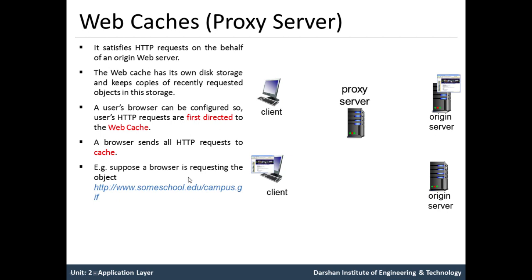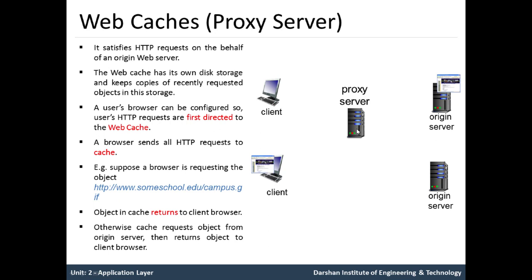For example, if the browser is requesting the URL some-school.edu/campus.gif, the object stored in the proxy server is returned to the client browser. If the object is not stored in the proxy server, then the request is passed to the origin server, and from the origin server, the object is responded back to the proxy server and then returned to the client browser.